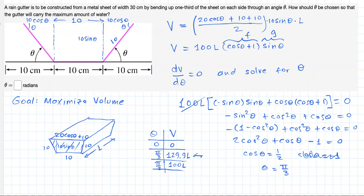Comparing, this is clearly the maximum volume. So therefore, we can say that if theta is equal to pi over 3 radians, the amount of water inside the gutter will be maximized.